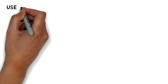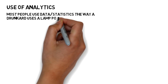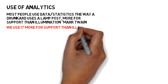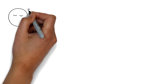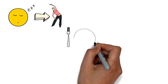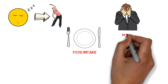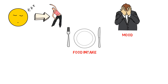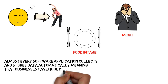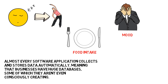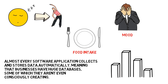Moving on — how is analytics used? Most people use data or statistics the way a drunkard uses a lamp post, more for support than illumination, said Mark Twain. Everything from sleep to exercise, food intake, mood and well-being is tracked, measured and shared nowadays. The same goes for businesses. Almost every software application collects and stores data automatically, meaning that businesses have huge databases, some of which they aren't even consciously creating.